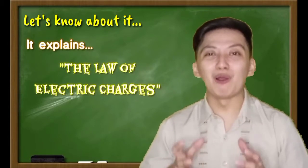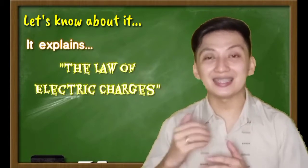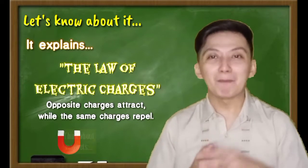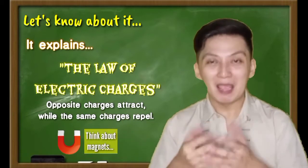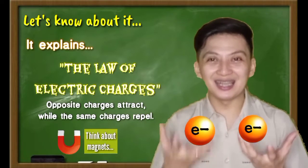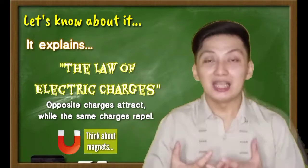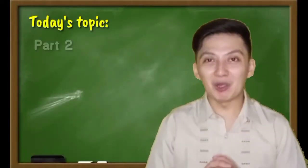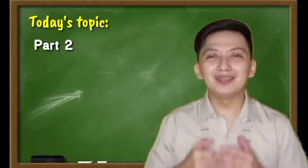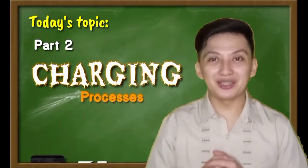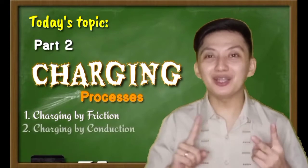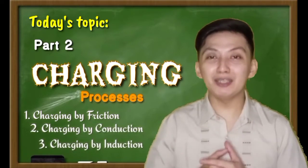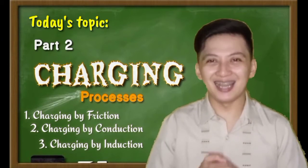The activity explains the law of electric charges, which states that opposite charges attract and the same charges repel. Positive and negative attract, positive and positive repel, negative and negative repel. That is the law of electric charges. Now, we have three different charging processes: charging by friction, charging by conduction, and charging by induction.